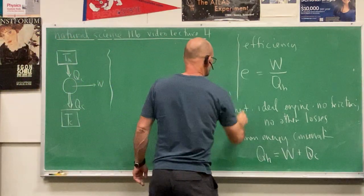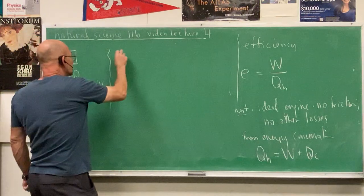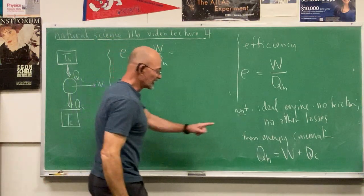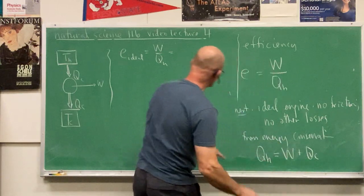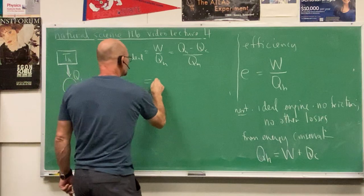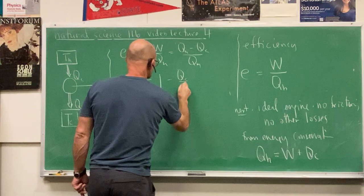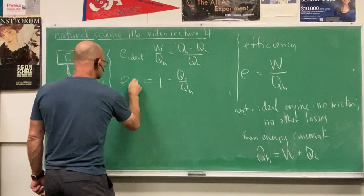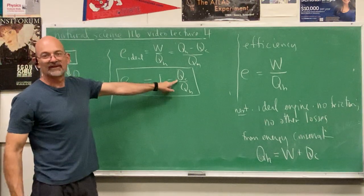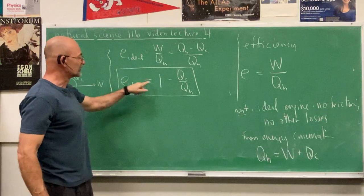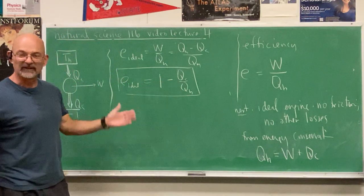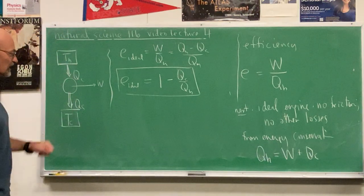With the efficiency definition and the ideal engine, we can write the ideal efficiency: E_ideal = W / QH. But W = QH − QC, so E_ideal = (QH − QC) / QH = 1 − QC/QH. This makes sense: if there were no exhaust at all, QC = 0 and efficiency = 1 (100%). But because there's always some exhaust — some waste heat — the efficiency is always less than 1, less than 100%.